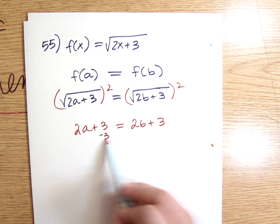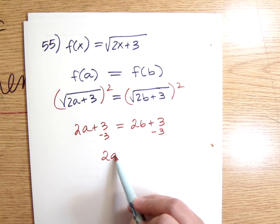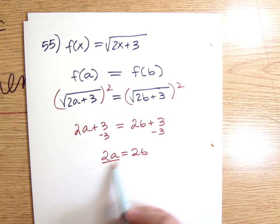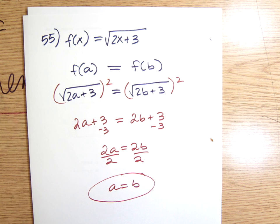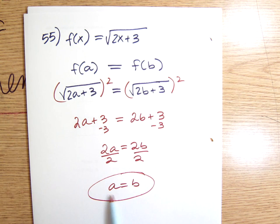And then I subtract 3 from both sides, and I get 2a equals 2b. And once again, this gives me the conclusion that a is equal to b. So if the two y values are equal, it's because the two x values were equal.